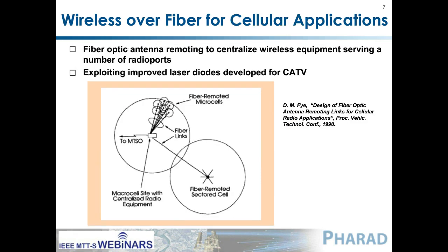It wasn't just work being carried out in the UK — there was also work being done in the US, considering not just cordless telephony but how you could transport cellular signals over optical fiber. This was done more than 25 years ago, when cellular technology was at its infancy. This was a way to replace coaxial cable with optical fiber and remote antennas to a number of different users. This was work done at GTE Labs, known for developing very high-performance lasers for the CATV industry — the type of laser they used to modulate with the wireless frequencies.